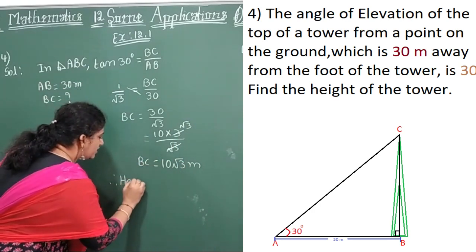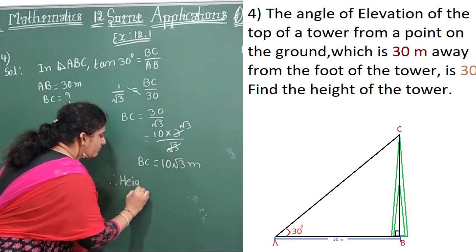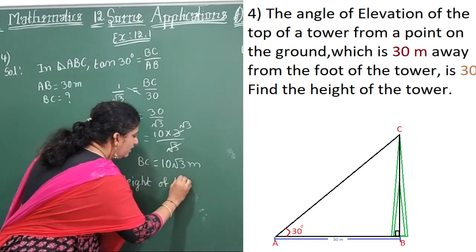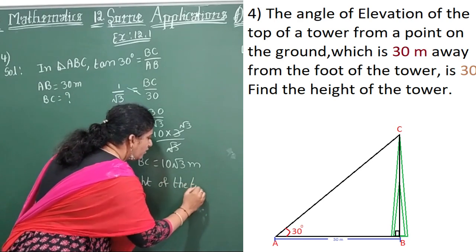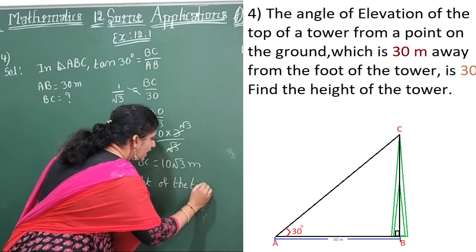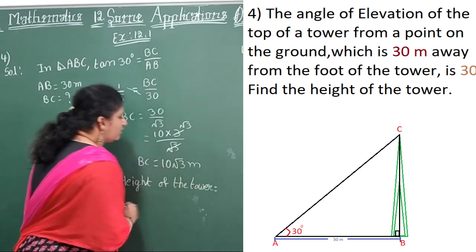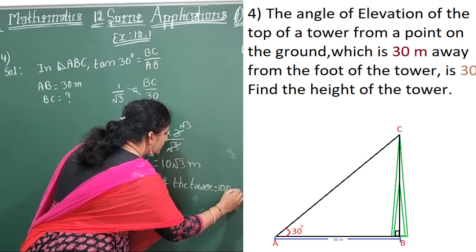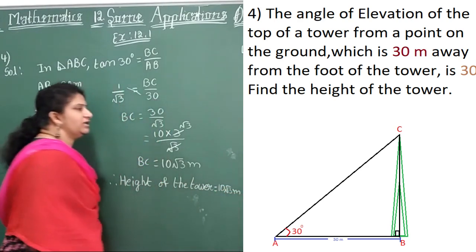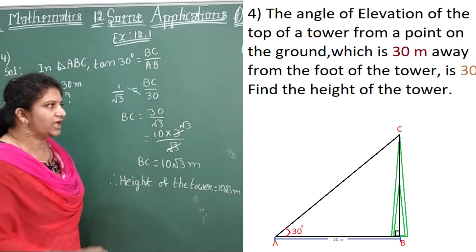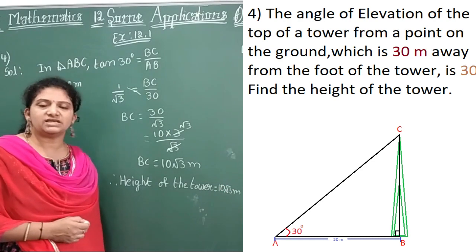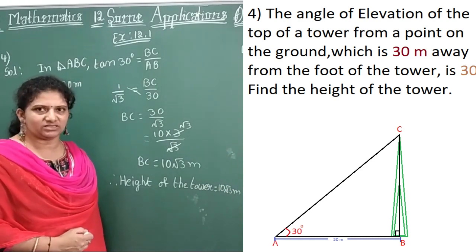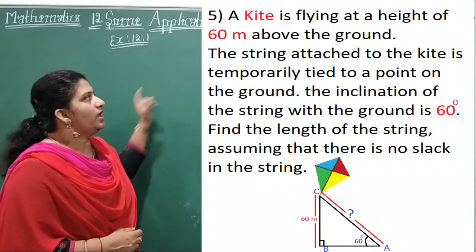Therefore, the height of the tower BC is equal to 10 root 3 meters.